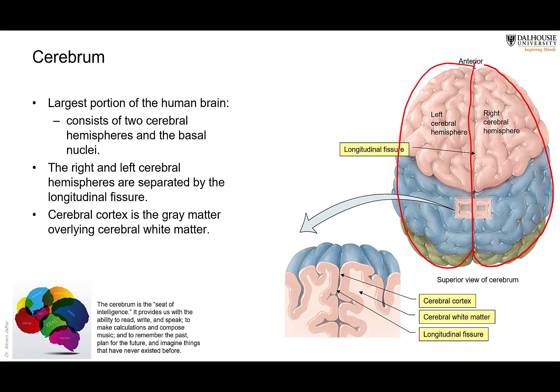The hemisphere has a cortex which is gray matter. The gray matter contains the nerve cell bodies, unmyelinated axons, dendrites, and neuroglial cells, but doesn't contain myelinated fibers. It is in the white matter that myelinated fibers are located, as you can see in the section here. The cortex is gray matter, and deep to it is the white matter.